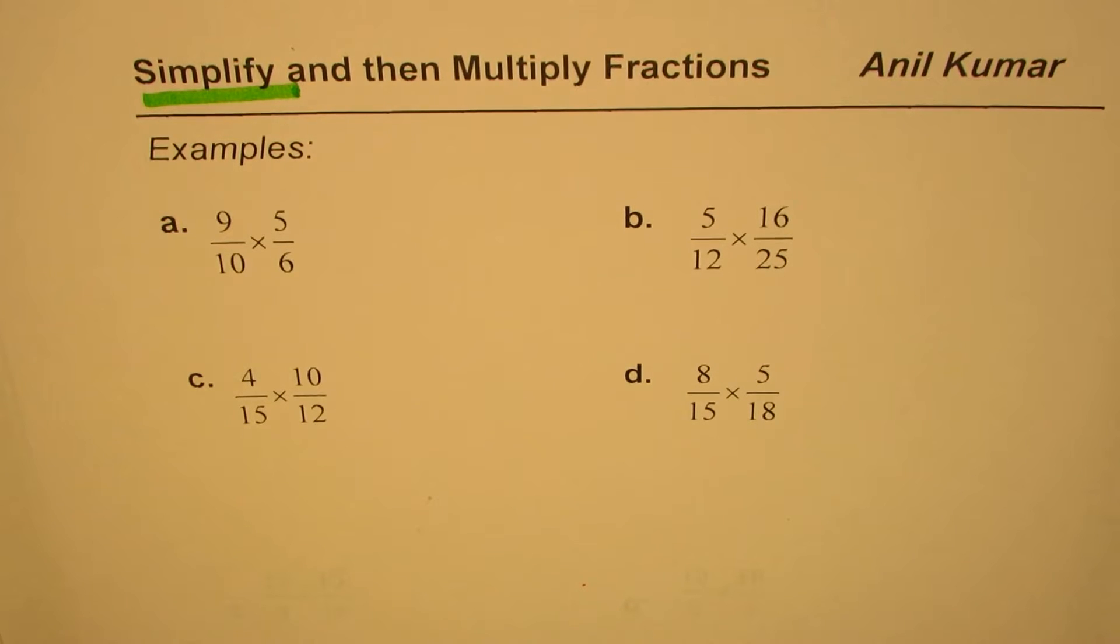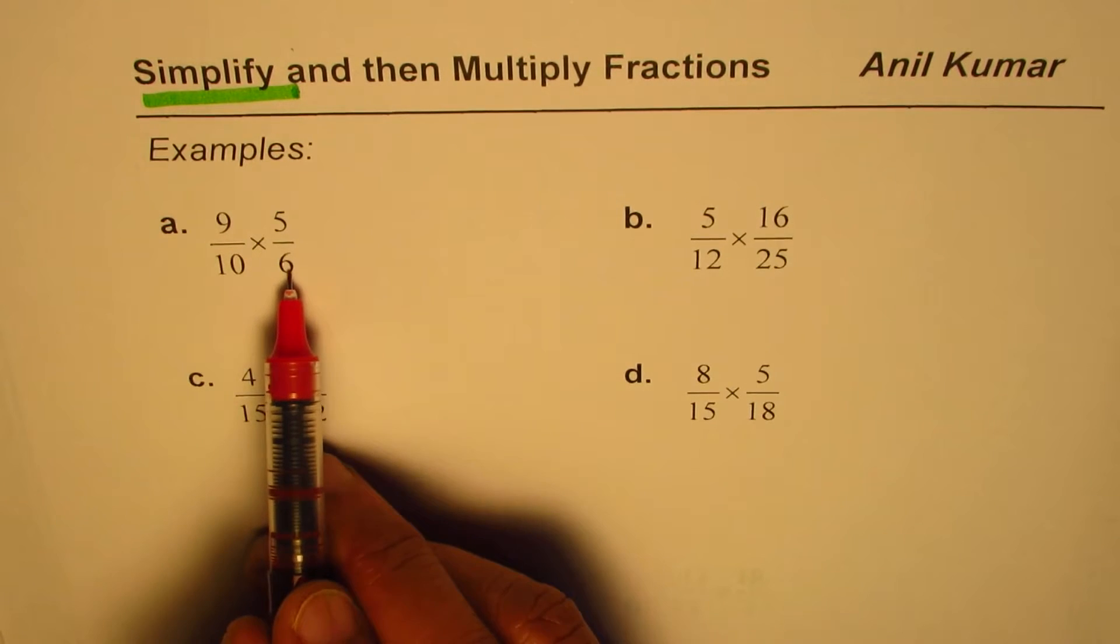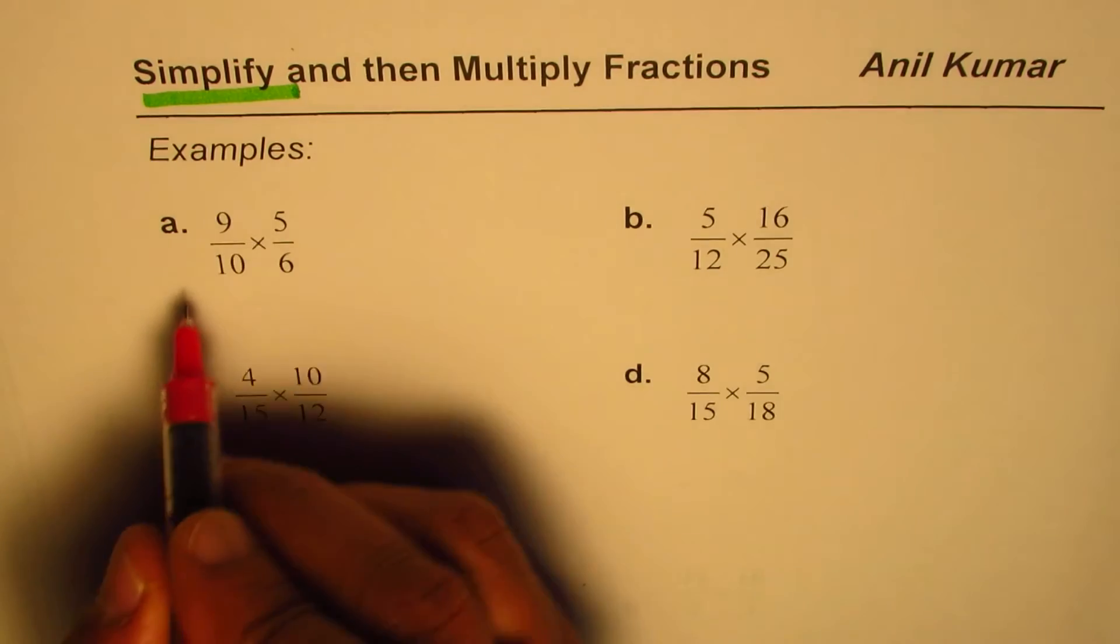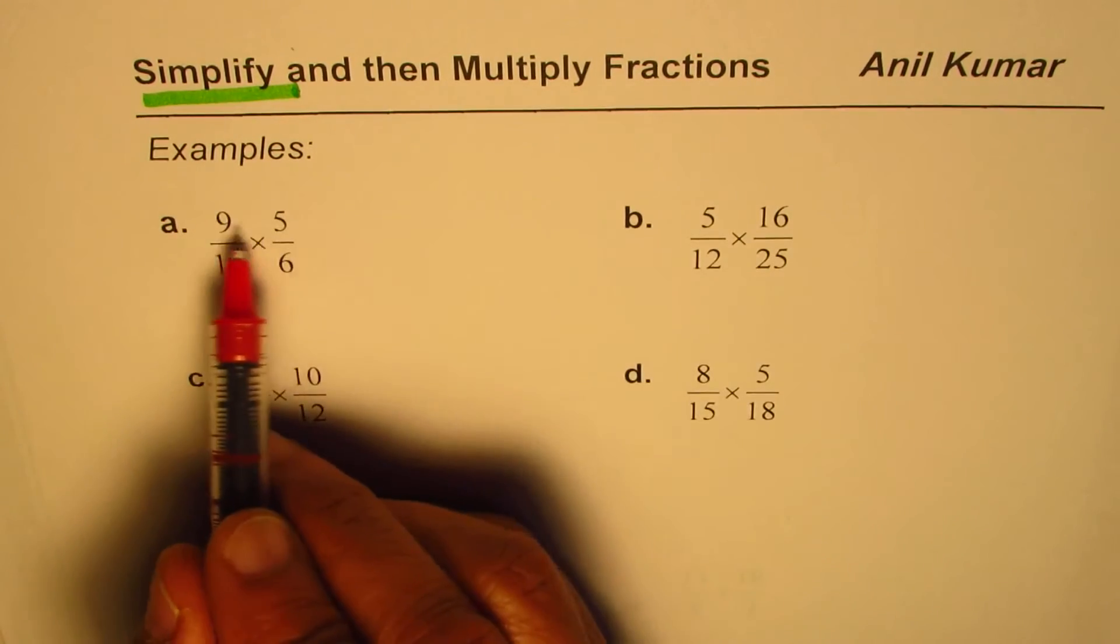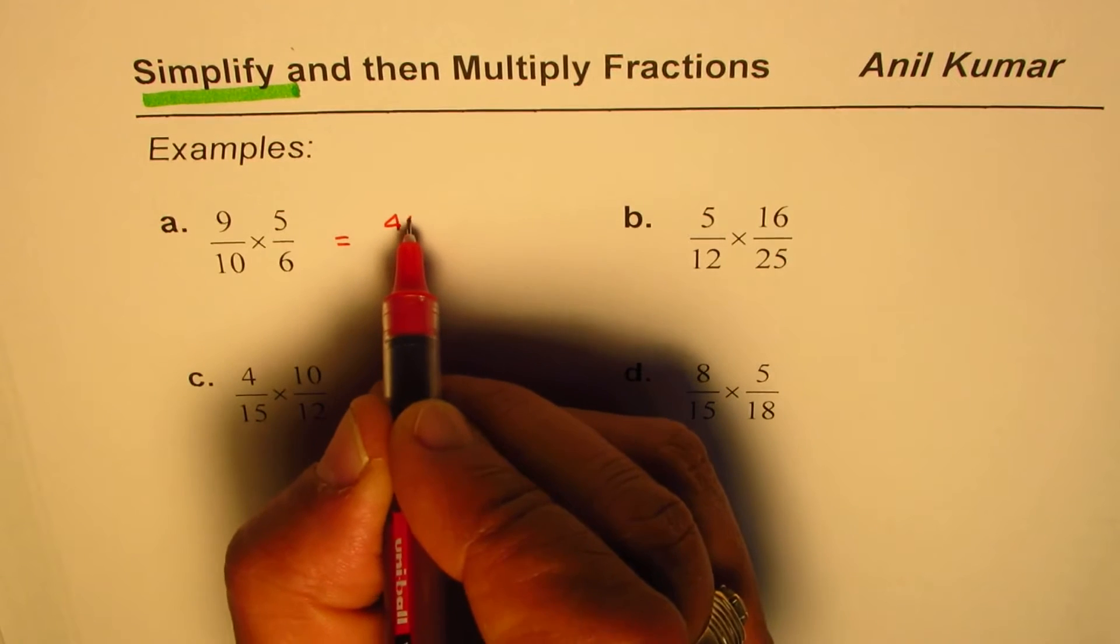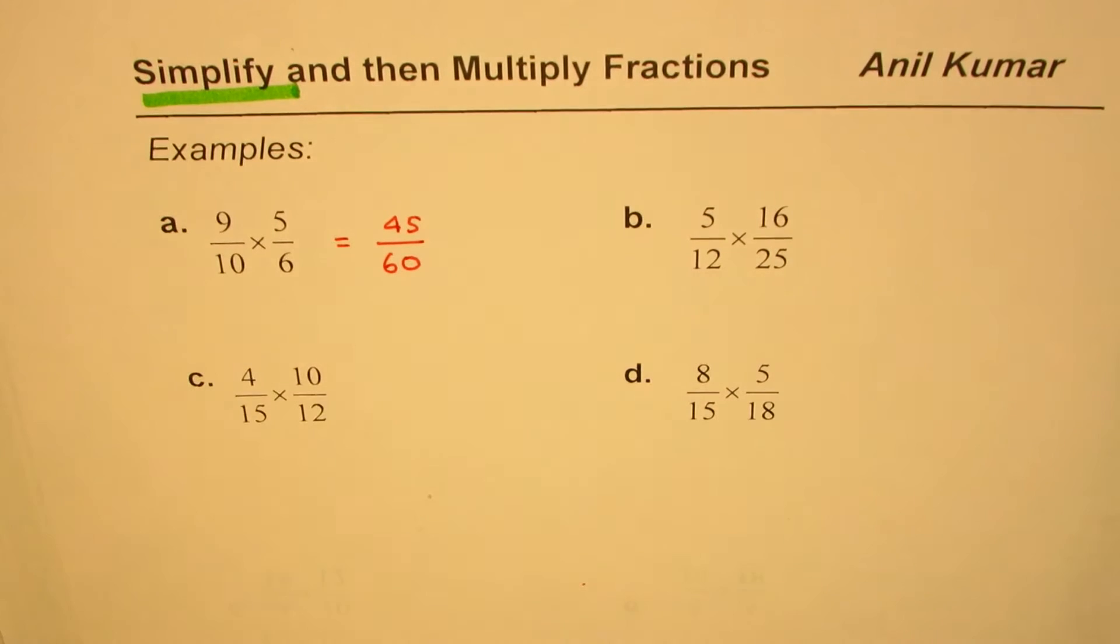So if you have 9 over 10 times 5 over 6, what you could do is just multiply them as we do for any fractions. Multiply the numerators: 9 times 5 is 45. Then multiply the denominators: 10 times 6 is 60.